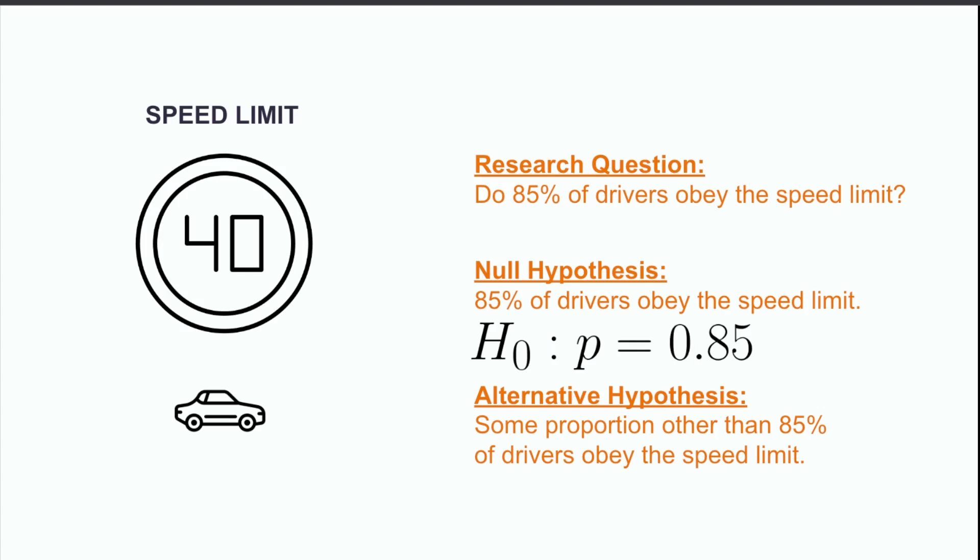Meanwhile, our alternative hypothesis, in the case of whether or not this is the right speed limit, is that some proportion of drivers other than 85% of them obey the speed limit. Notice how this does not say anything about whether we need to increase or decrease the speed limit, nor by how much the drivers are disobeying it. It just provides the alternative answer to the research question of whether 85% of drivers are obeying the limit. Mathematically, we write this as H sub A colon P not equal to 0.85.